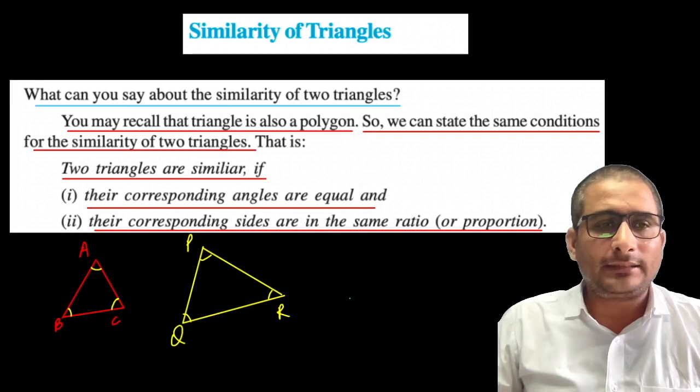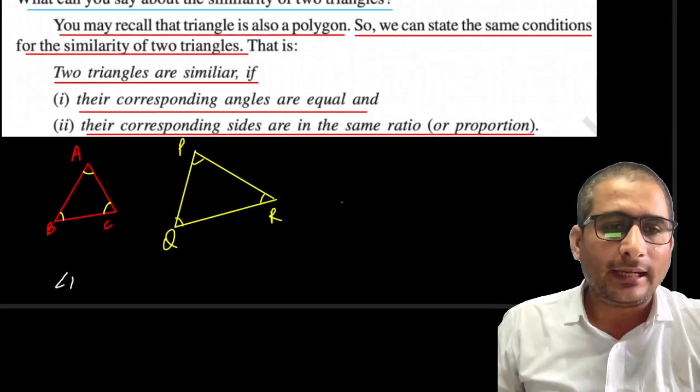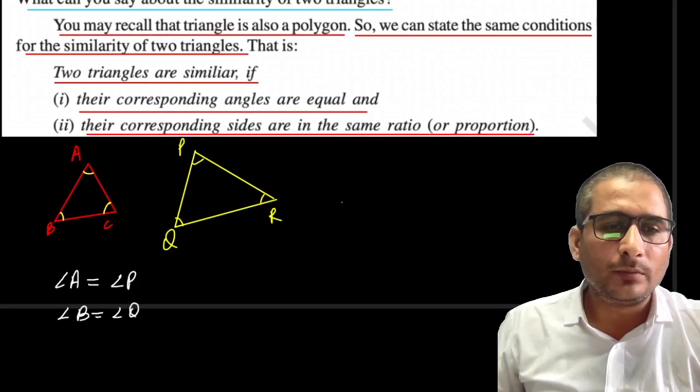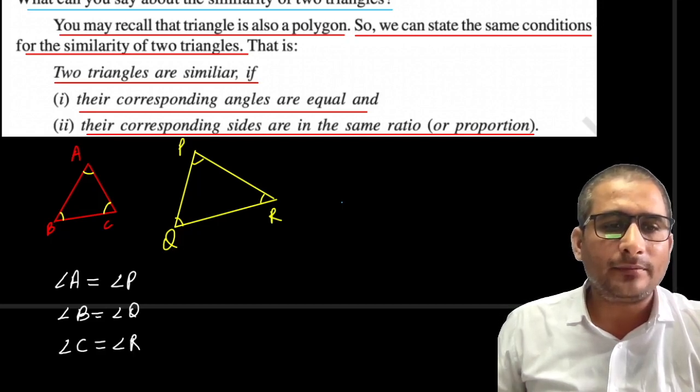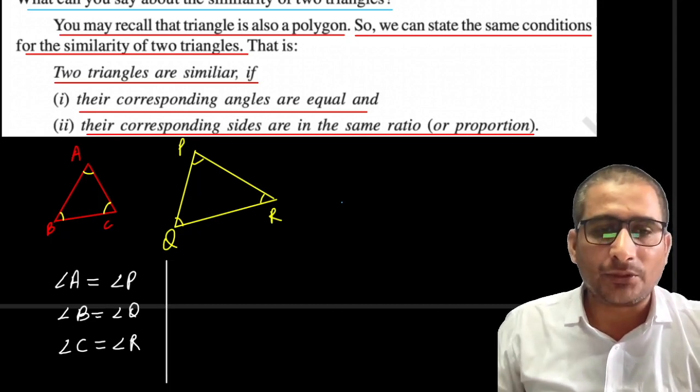The second condition is that the ratio of sides should be the same. The first condition is angles: angle A equals angle P, angle B equals angle Q, angle C equals angle R.